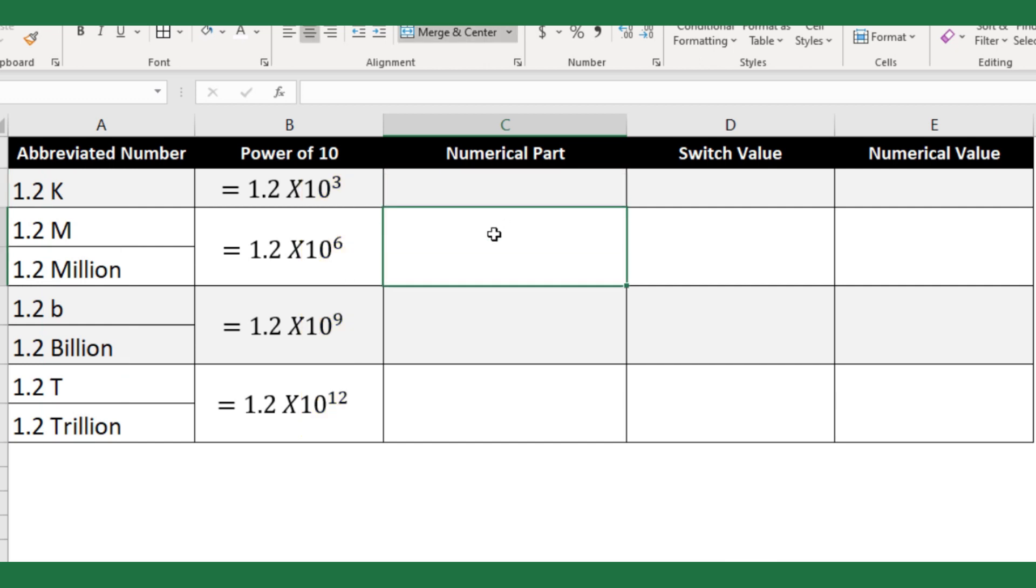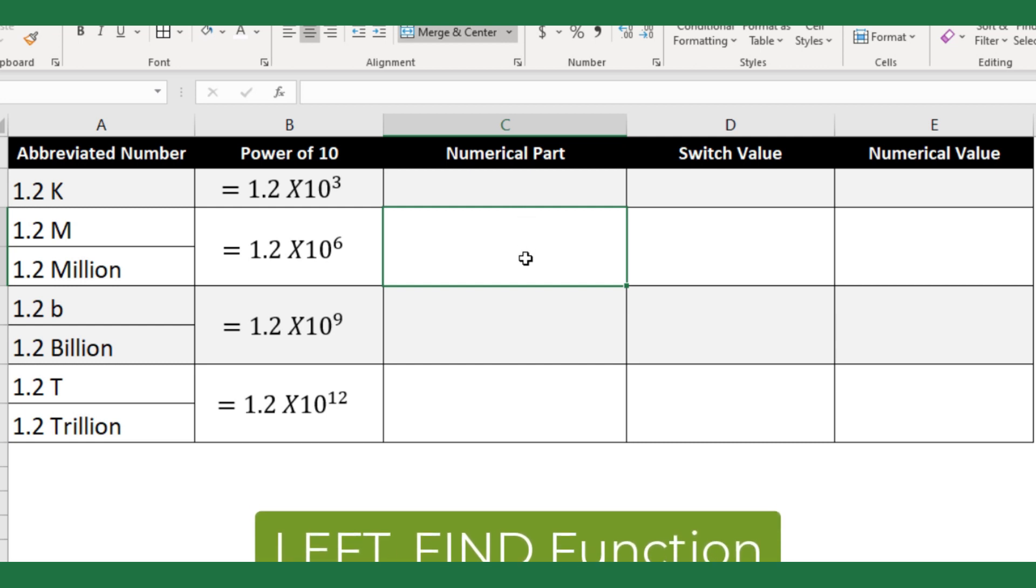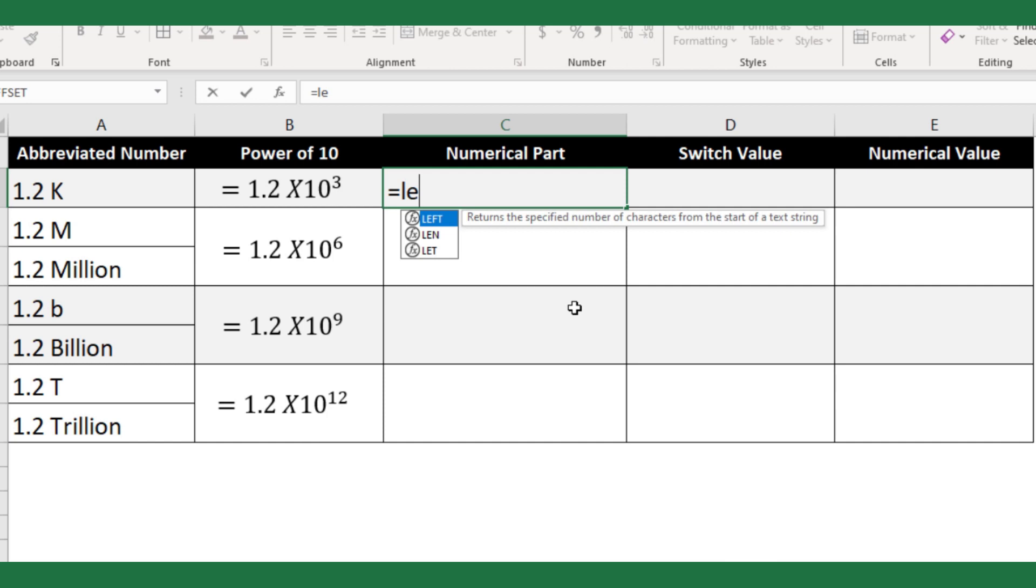First, let me extract the numerical part. For this, I will use Excel LEFT and FIND functions. Hence, equal LEFT. Here I am using the LEFT function since I need to extract the number from the left side of the given text string.